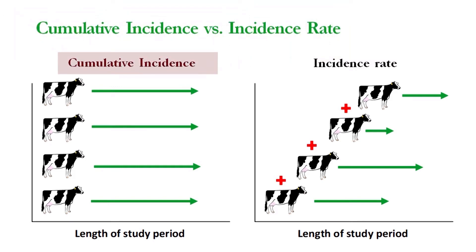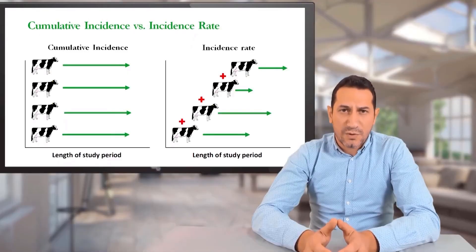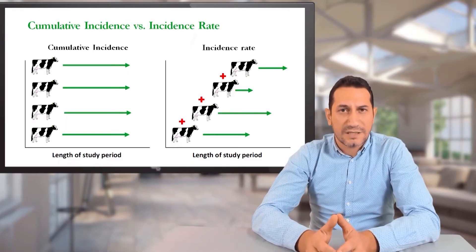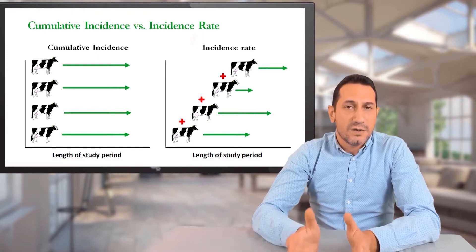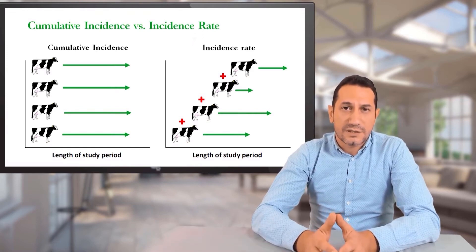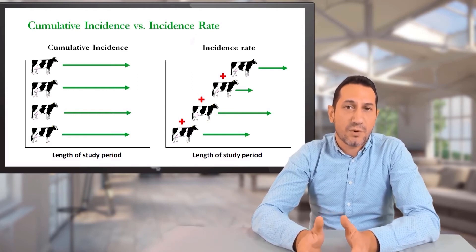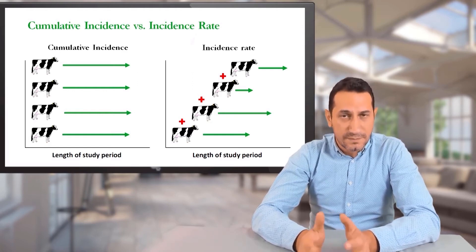The cumulative incidence looked at the whole period of time for all the animals being enrolled in the study, and therefore that was a proportion. So we see that from four cattle, if we get one sick, then it's one out of four, or 25% of the herd infected — that's the proportional concept for the cumulative incidence.